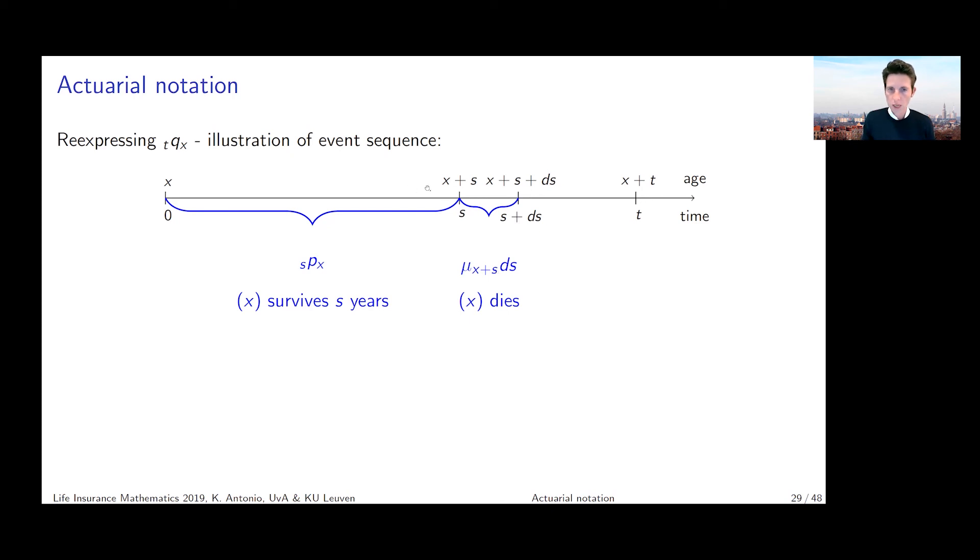And what we can do now is if we let the s run from zero to t and capture all these probabilities, then we get in total the probability of dying for an x year old in t years from now. So _tq_x can be expressed with an integral expression as the integral from zero to t of _sP_x multiplied with mu_{x+s} ds. That's another way of putting it.